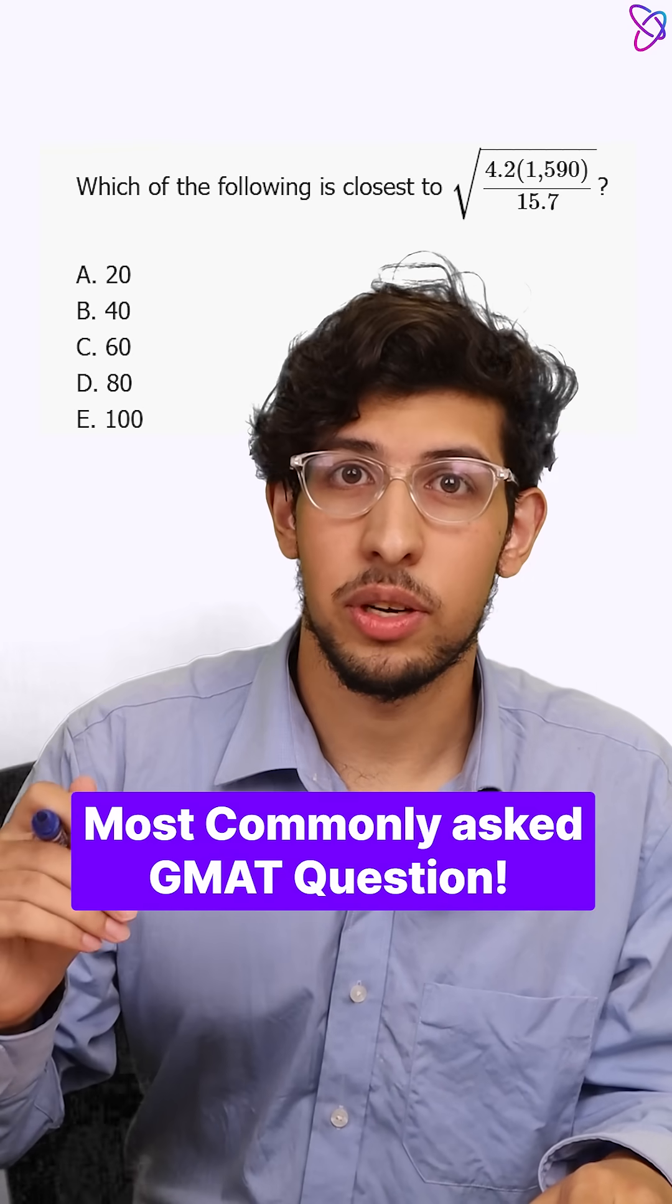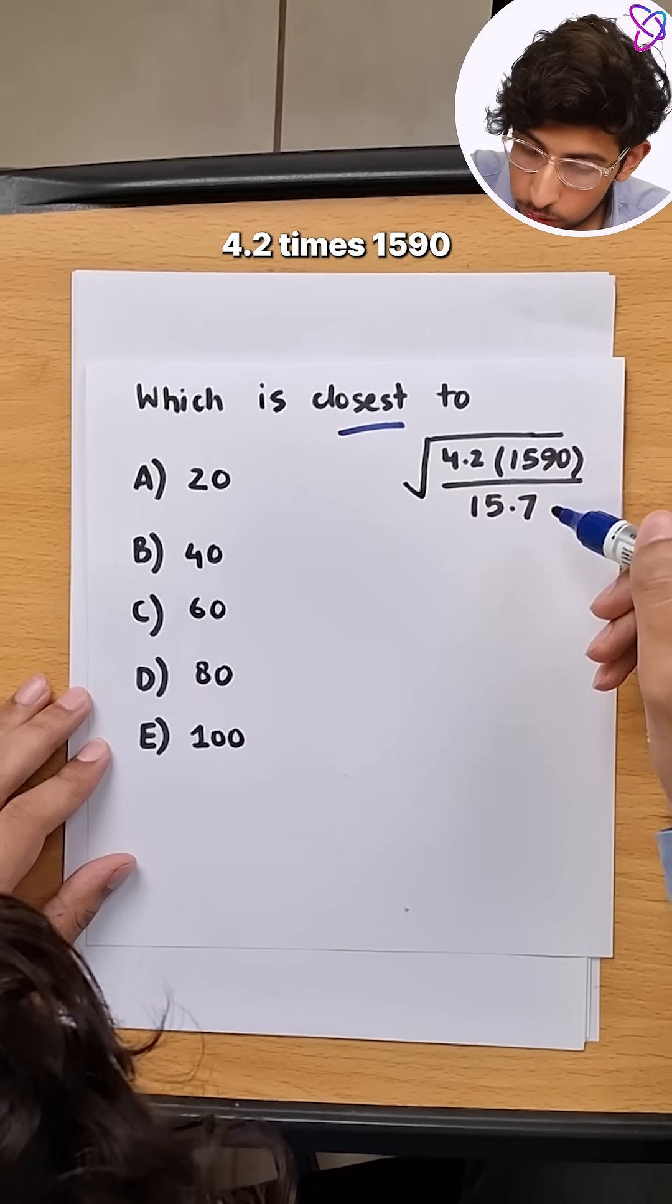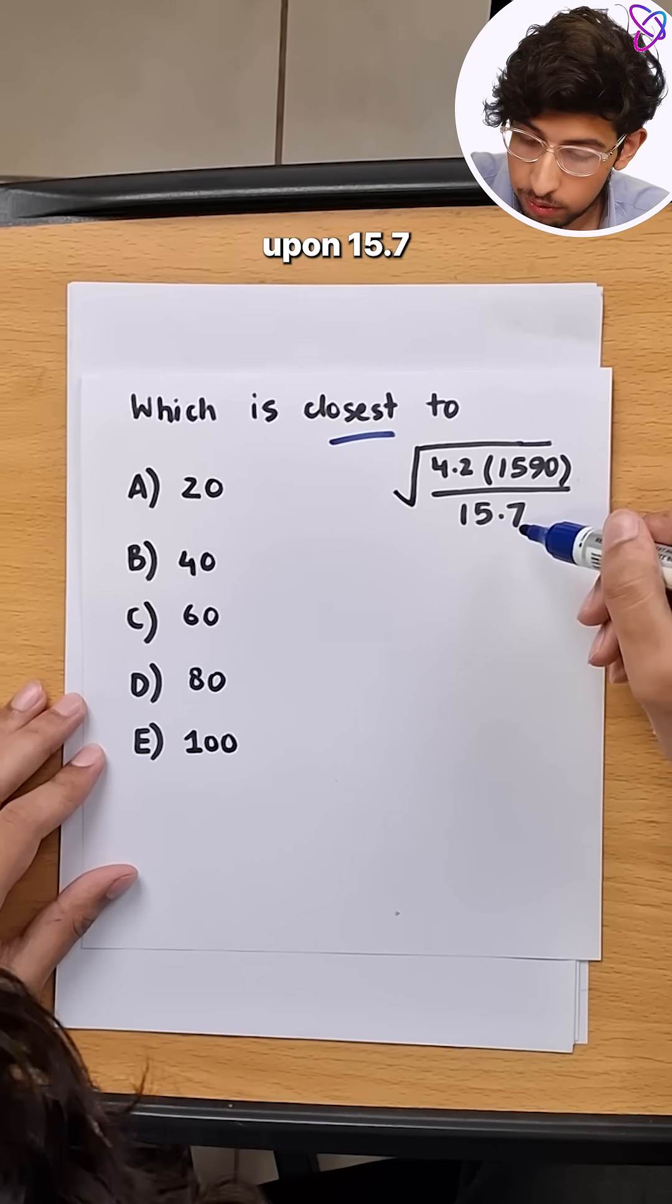So this is one of the most commonly asked GMAT questions. The question goes like this: which is the closest to 4.2 times 1590 upon 15.7?